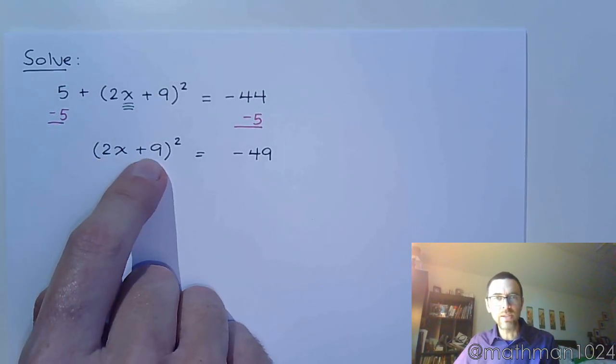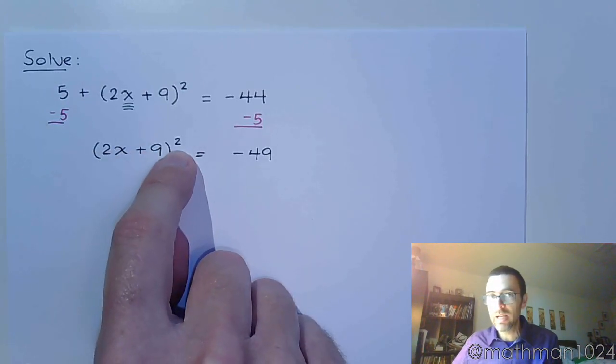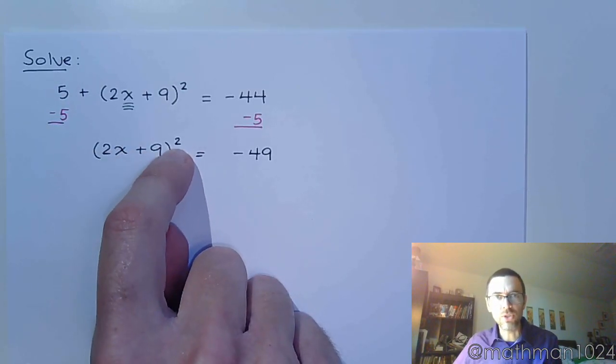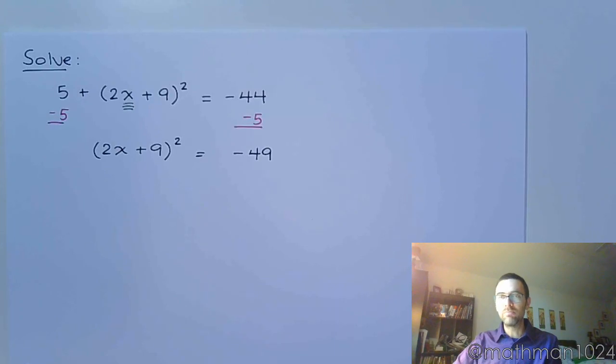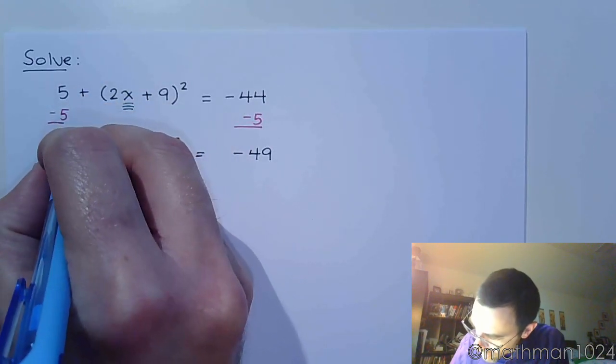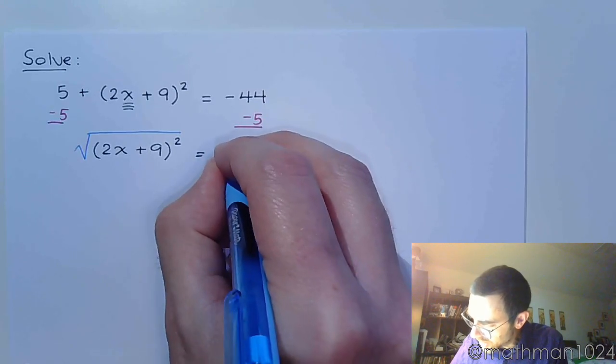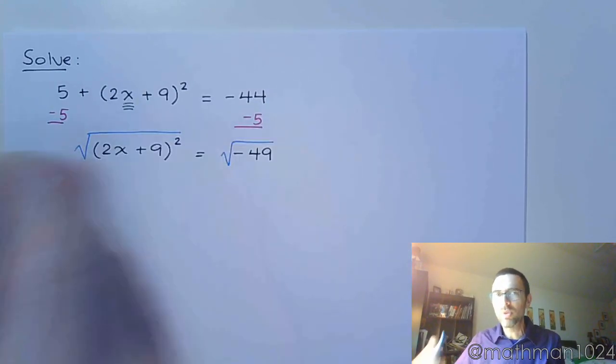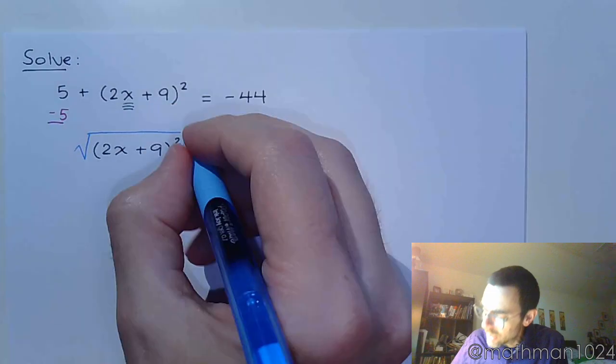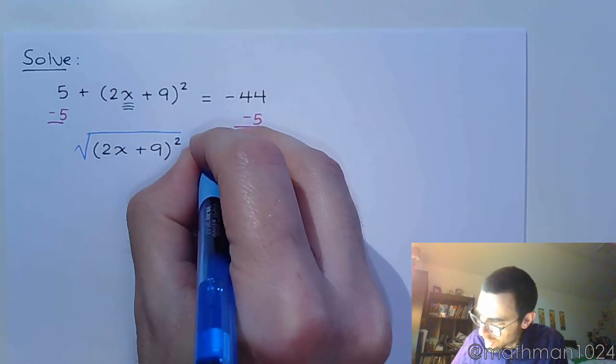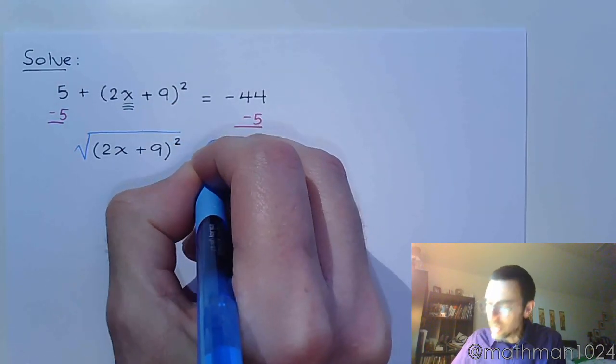All right, well I can't do anything with the 2 or the 9 inside the parentheses until I address the square up here. The way that I can address that and undo that, do the inverse operation, is by taking the square root. So I'm going to take the square root of both the left side and the right side of the equation.